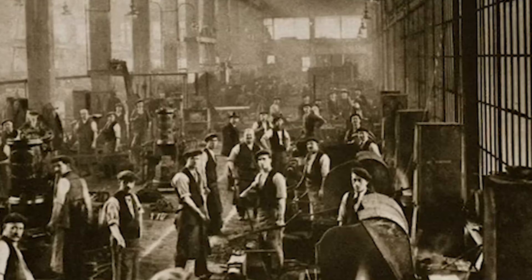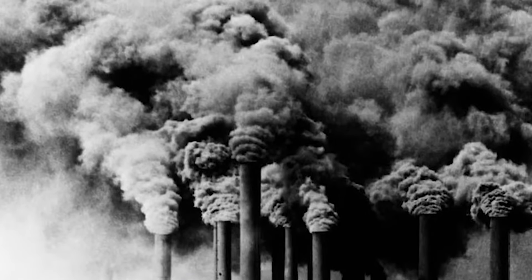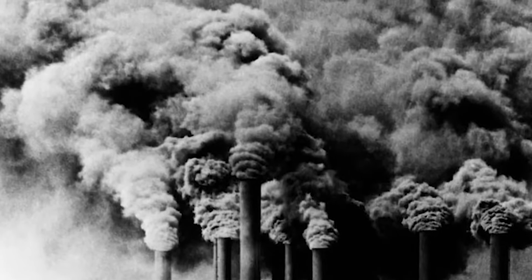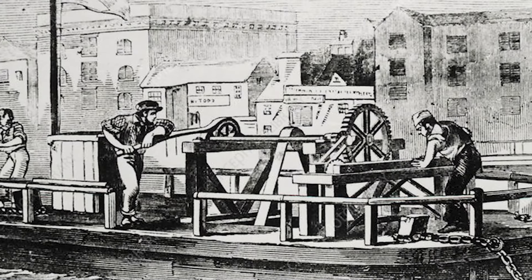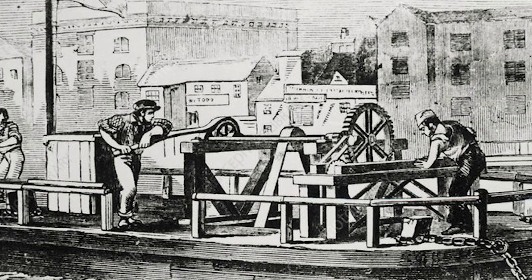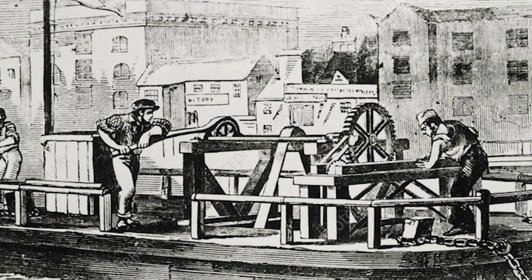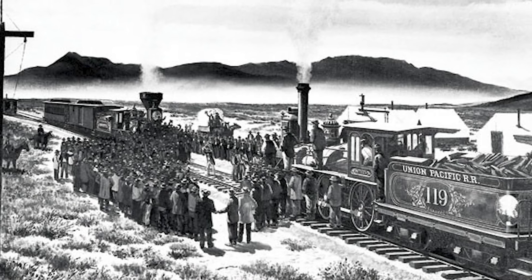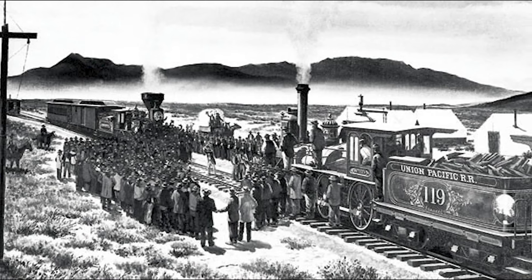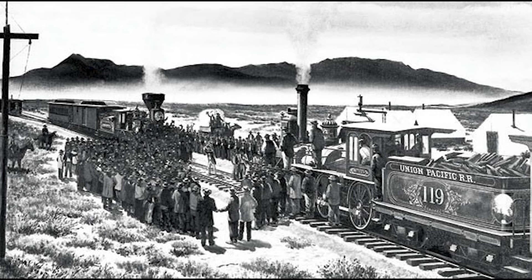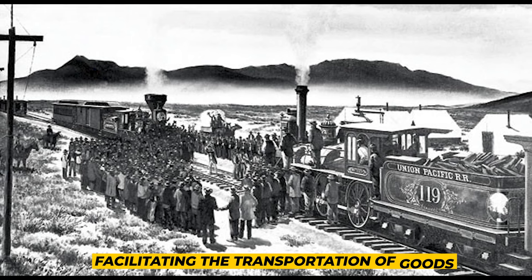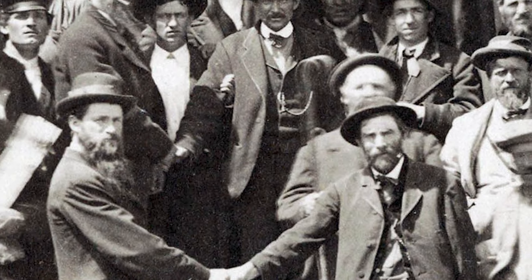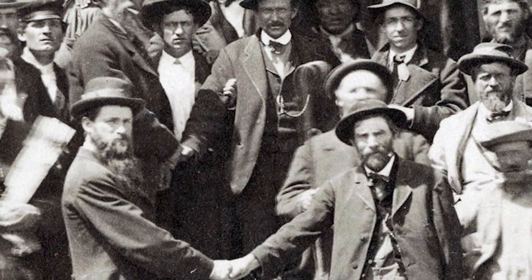The first cotton mill in the U.S. was established after Samuel Slater brought British manufacturing technology to America. This water-powered mill created jobs and boosted commerce in the Northeast. The completion of the first transcontinental railroad in 1869 was a major milestone, facilitating the transportation of goods, people, and raw materials across the nation.